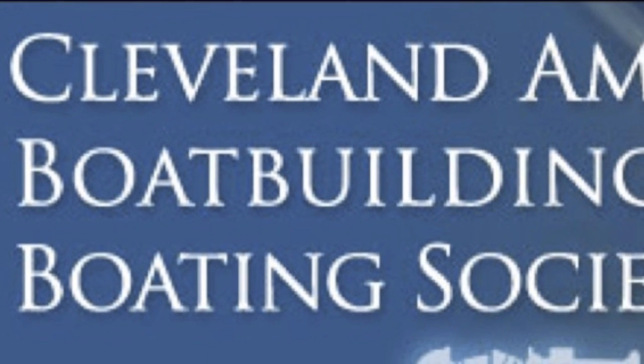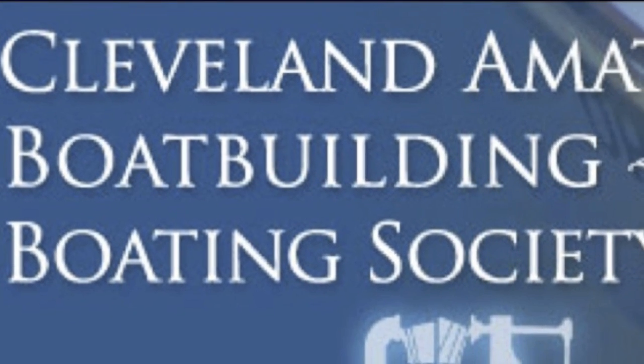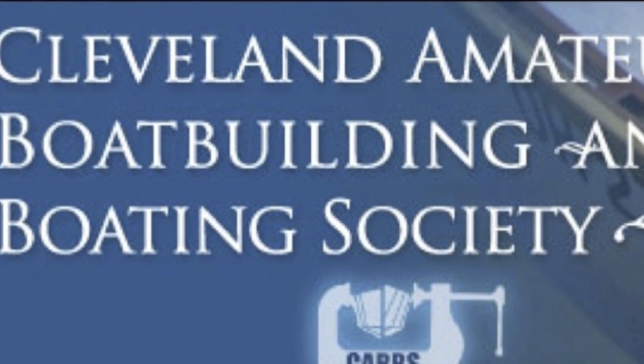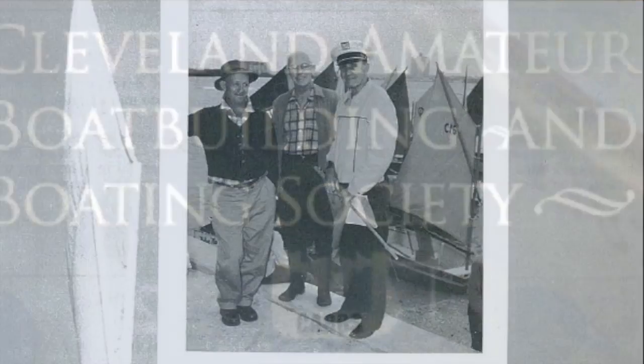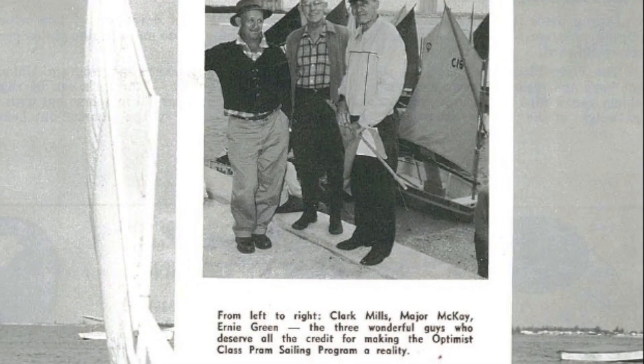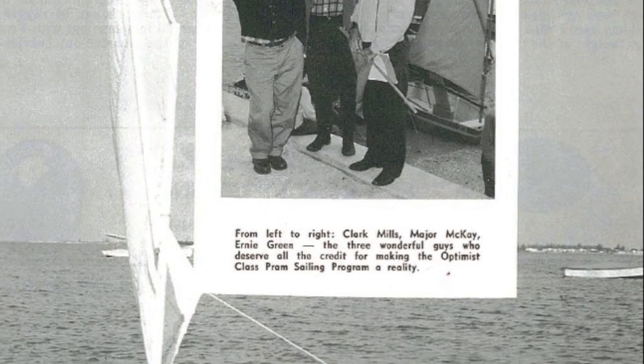My three brothers and I have gotten together to make Optimus dinghies for our kids who are all under the age of 11 years old. We're using the Cleveland Amateur Boat Builders and Boat Builder Society plans. They're very close to Clark Mills original 1949 plans down in Clearwater and we're getting set up in the shop today.